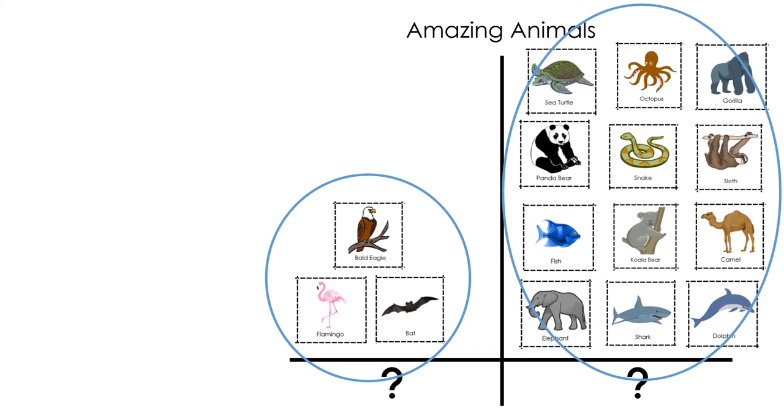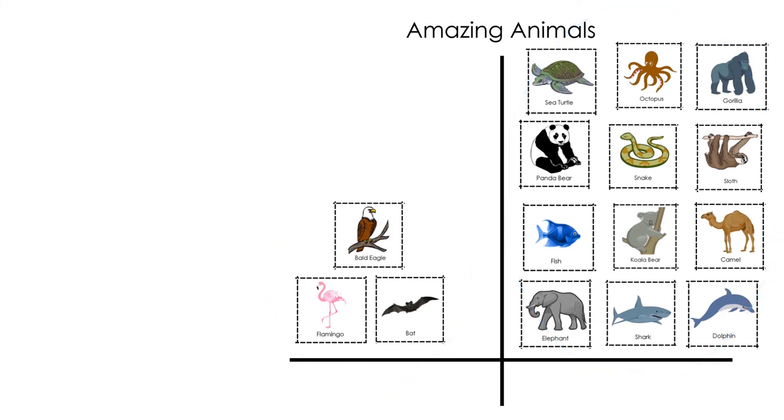Did you figure out that all of the animals in the first category are animals that can fly, and the animals in the second category are the ones that cannot fly?